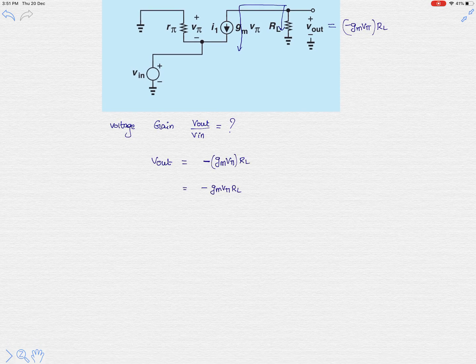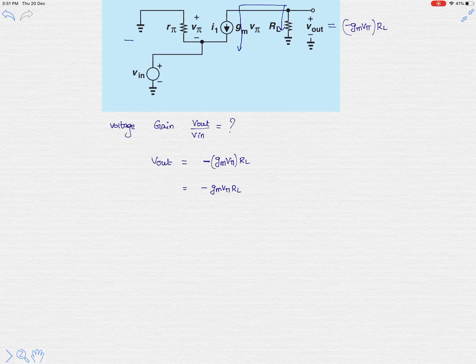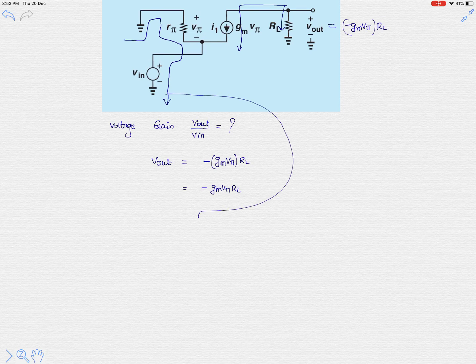Then the KVL equation is plus v phi plus v in equals to zero. So this will give the value v in is minus v phi.